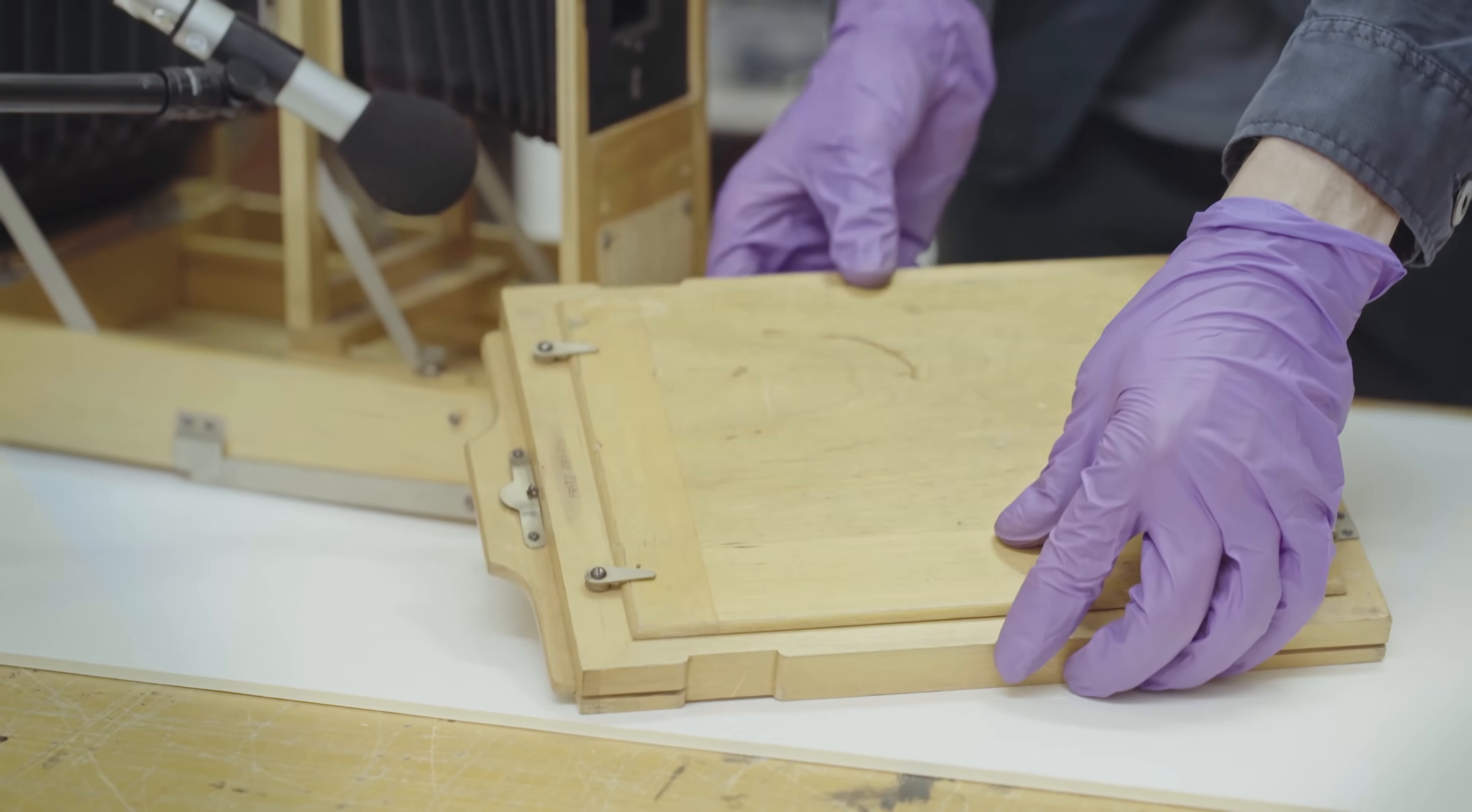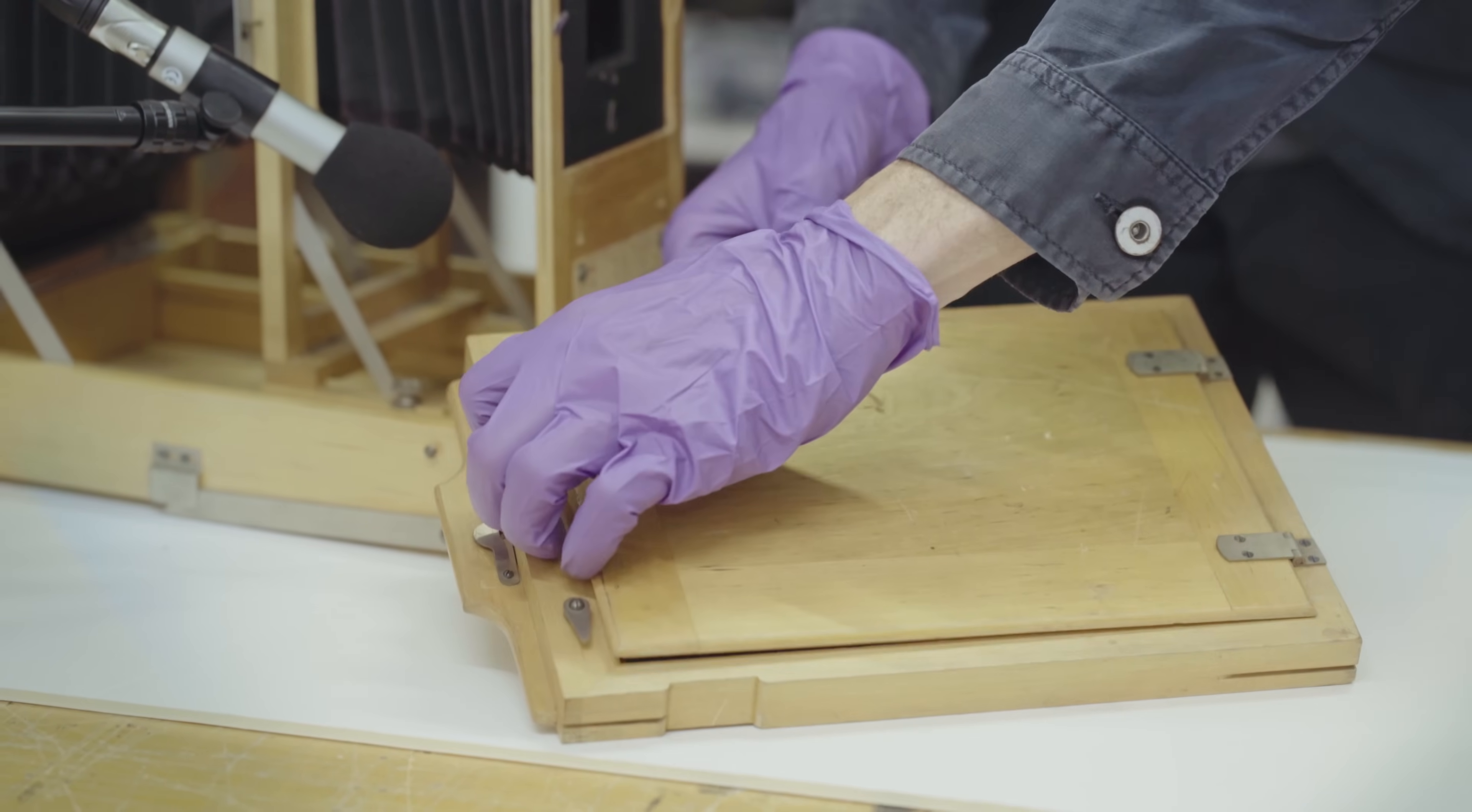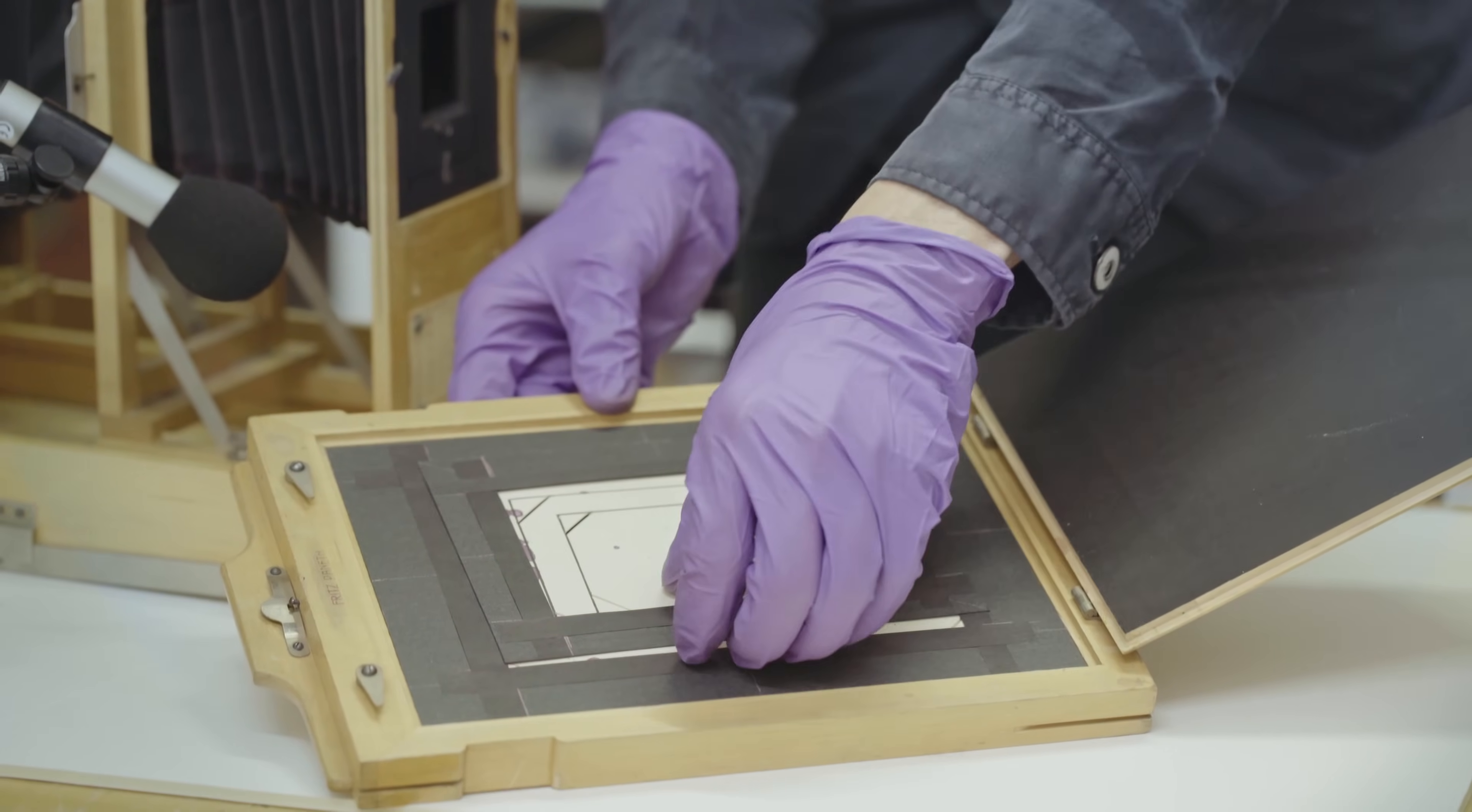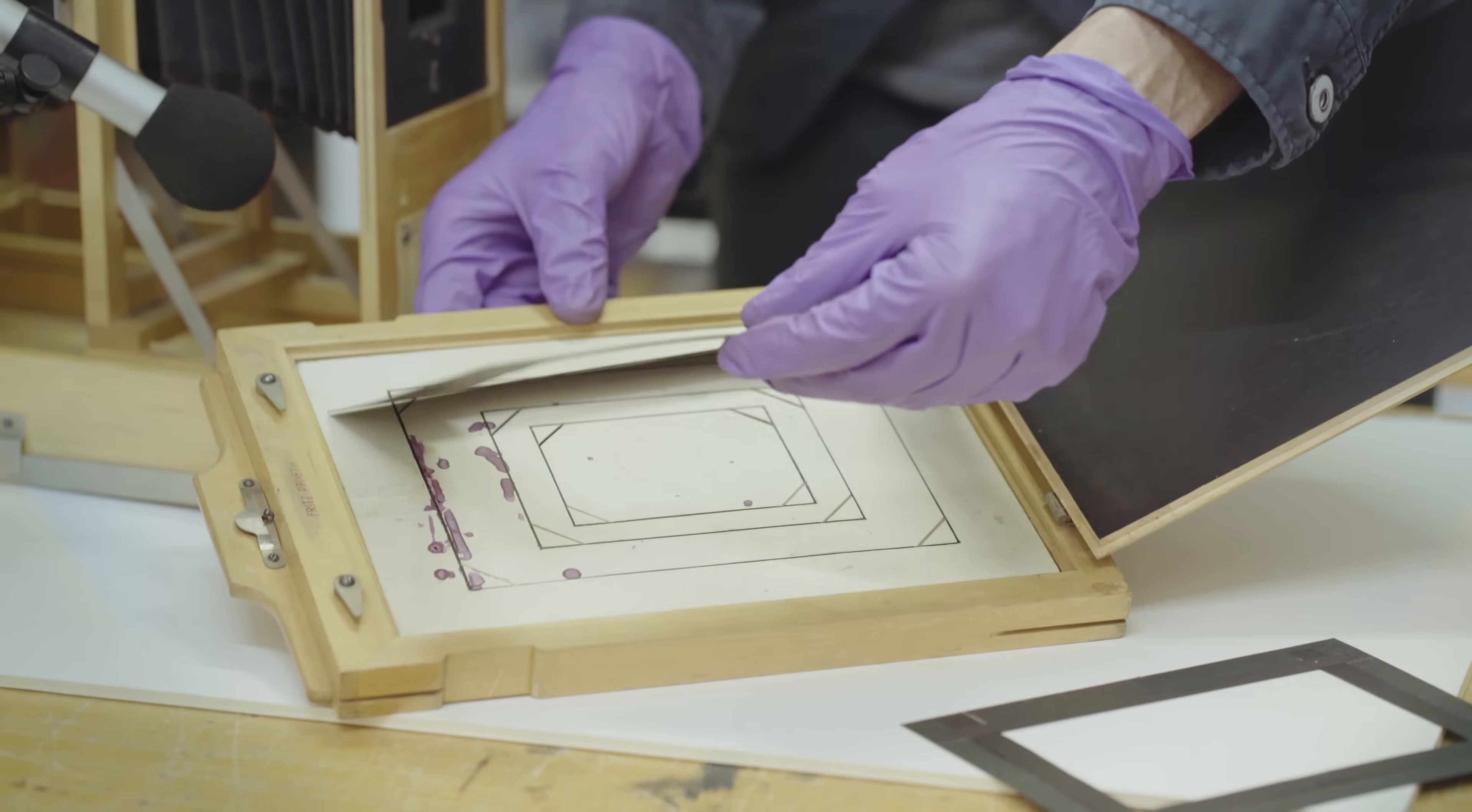So this is the paper holder of the enlarger. You would open it up like so. And inside, as you can see, we have various masks that would have been used in order to crop an image.